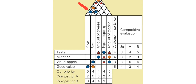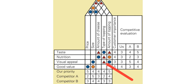The roof shows the relative strength between technical features. The relationship between price and size is very strong, whereas the relationship between size and amount of topping is weak. In the middle, the relationship between customer requirements and technical features are identified. There's a strong relationship between taste and the type of topping, but a weak relationship between visual appeal and type of topping.